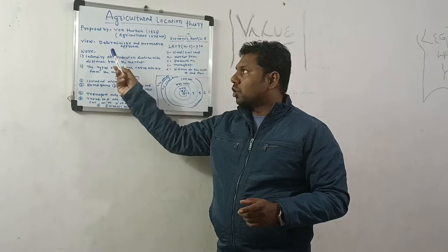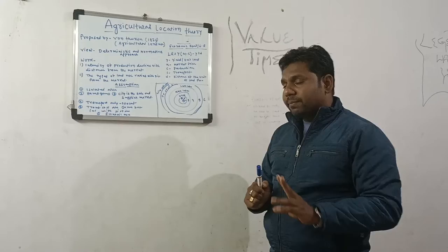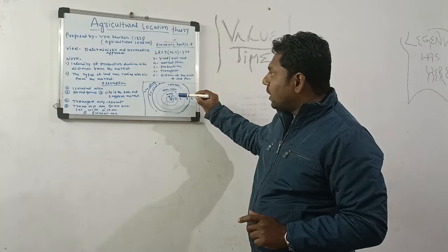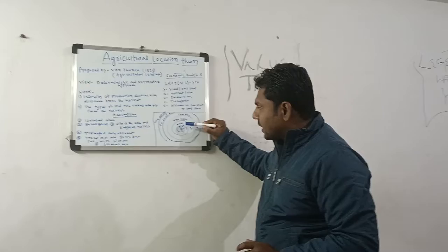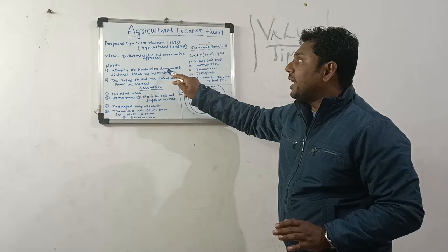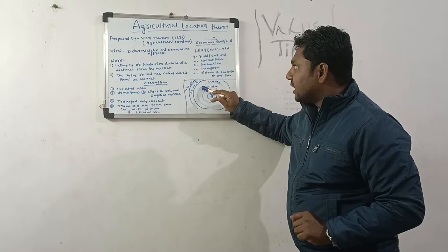This concept is based on two types. First, the intensity of production declines with distance from the market. This is shown in a diagram called six zones, where this area is the market area. The intensity of production declines and the amount of land use decreases as distance from the market increases.